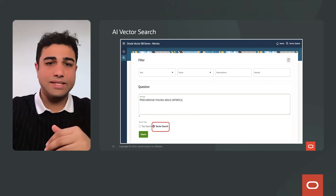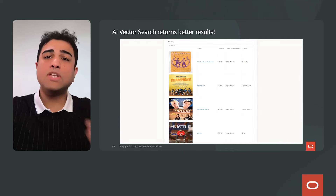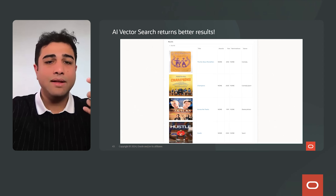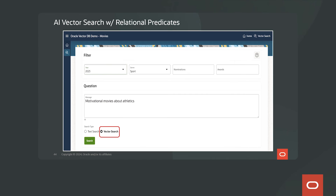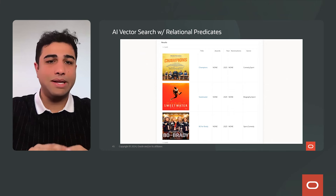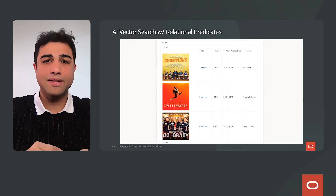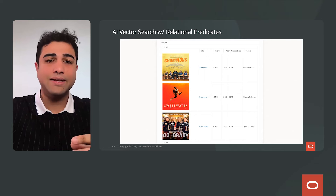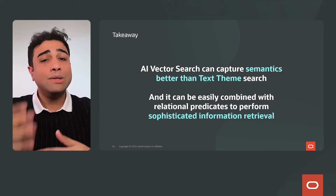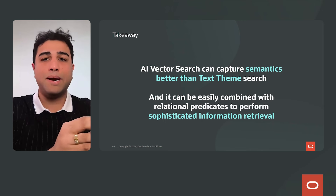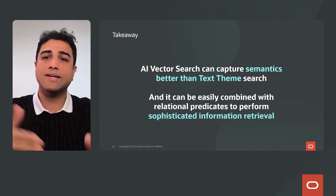Switching to AI Vector Search for the same query returns much more relevant results: the Decathlon Champions movie, Hustle — all genuinely athletic movies. Adding relational predicates filtering for year 2023 and genre sport narrows results to Champions, Sweetwater, and 80 for Brady — all from 2023. This shows that AI Vector Search captures semantics better than text search and can be easily combined with relational predicates for more sophisticated information retrieval.